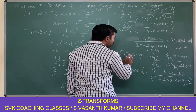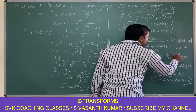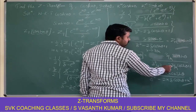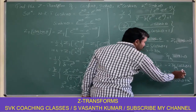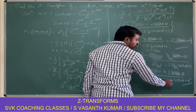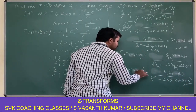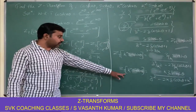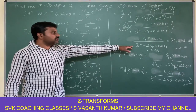To find the Z transform of k power n sinh(nθ), replace z by z/k. We get z/k times sinh(θ) divided by z squared by k squared minus 2z by k times cosh(θ) plus 1. Taking LCM as k squared and multiplying both numerator and denominator by k squared, we are left with kz sinh(θ) divided by z squared minus 2kz cosh(θ) plus k squared. That is the Z transform of k power n sinh(nθ).